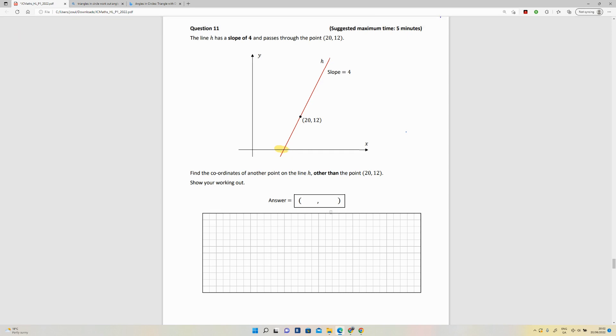Okay, so if we establish a formula for h, an equation for the line h, and plug in the point 20 comma 12, we should be able to work out what x is at y equals zero. Okay.